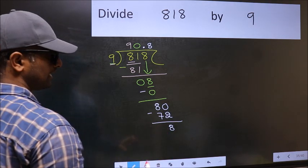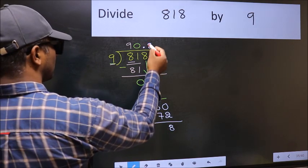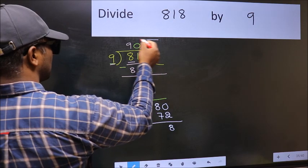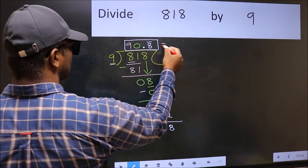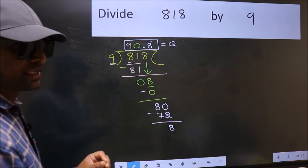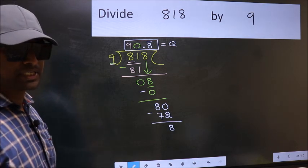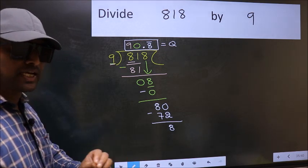We got 8 again. That means we get bar on this number. So this is our quotient. Did you understand where the mistake happens? You should not do that mistake.